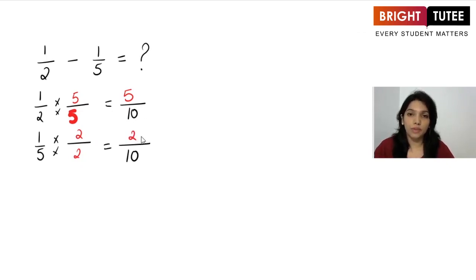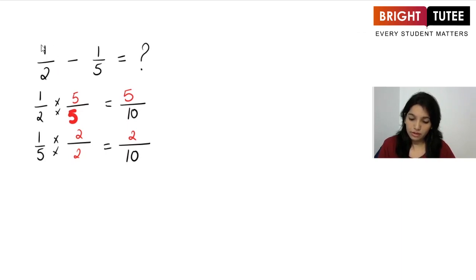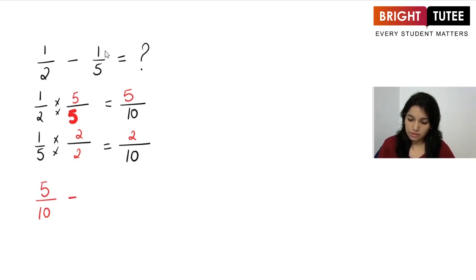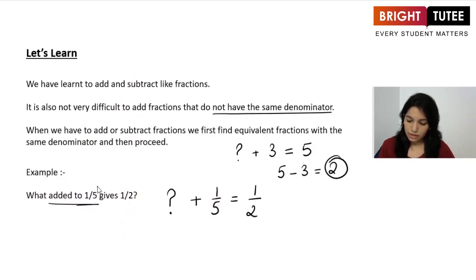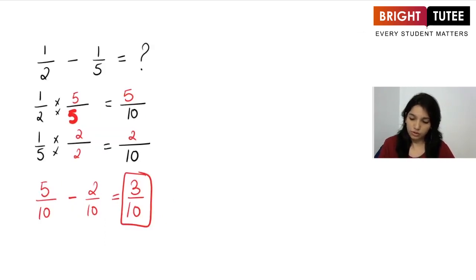So instead of 1 over 2 we write 5 over 10, and instead of 1 over 5 we write 2 over 10. So 5 over 10 minus 2 over 10 gives us 3 over 10. This is that particular number which, when added to 1 over 5, gives 1 over 2. Let's do the verification now.